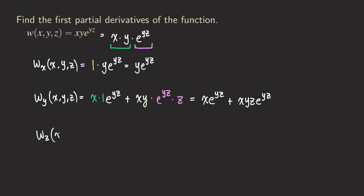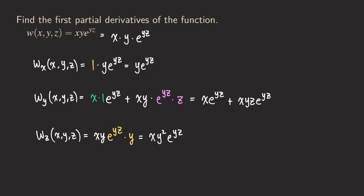Now Wz. This one is actually easier. Looking at the three functions, only the third function e^(yz) involves z. So x and y can be treated as a constant multiple — just copy them, then differentiate e^(yz): copy the function and multiply by the derivative of yz with respect to z. Y is a constant multiple and z becomes one, so we get y. The final answer for Wz is xy²·e^(yz), because there was a y in xy and another y from the chain rule derivative.